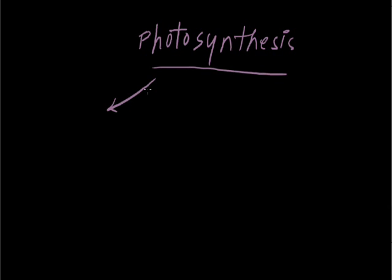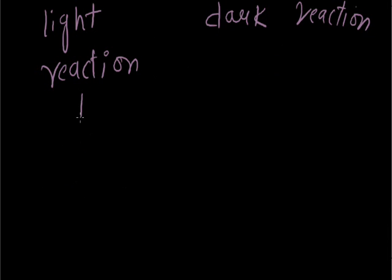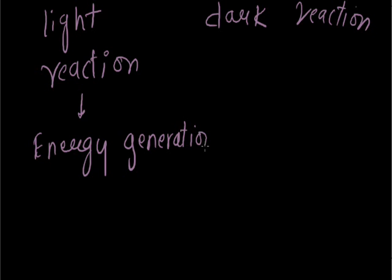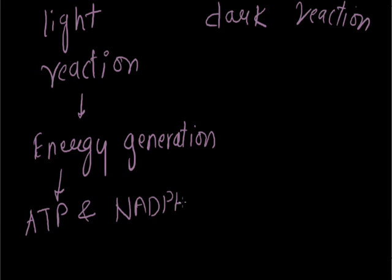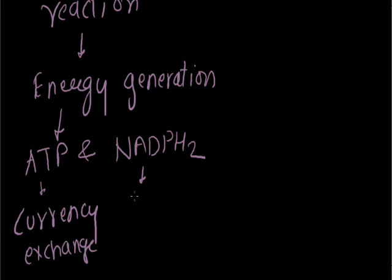Now we will discuss about the reactions of photosynthesis. Photosynthesis will be divided into two reactions: one is light reaction and another will be dark reaction. What happens in light reaction? The energy is generated — what energy is generated for food production? The energy in the form of ATP and another one is NADPH2, which is the reducing power and the currency of exchange for the cell. This energy which is used in the dark reaction.